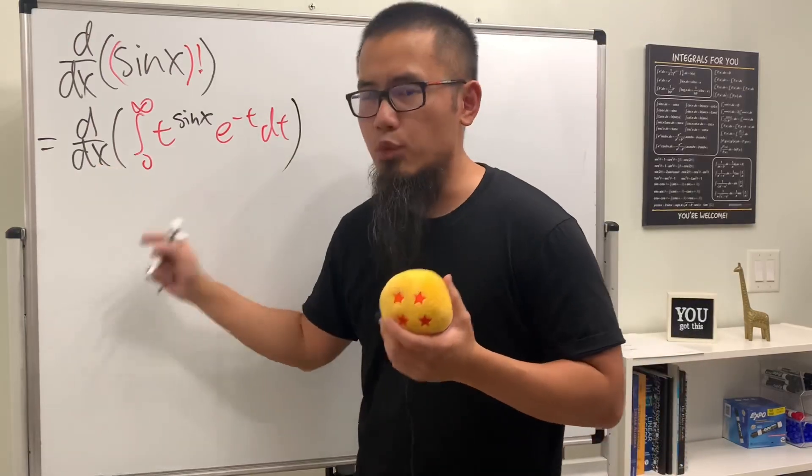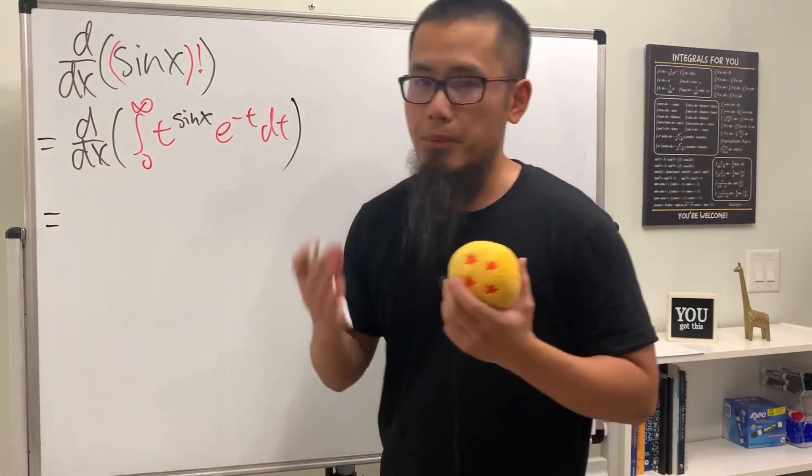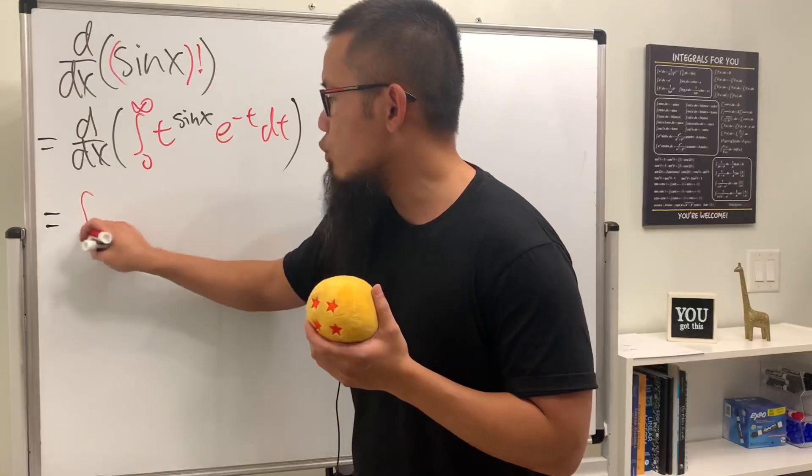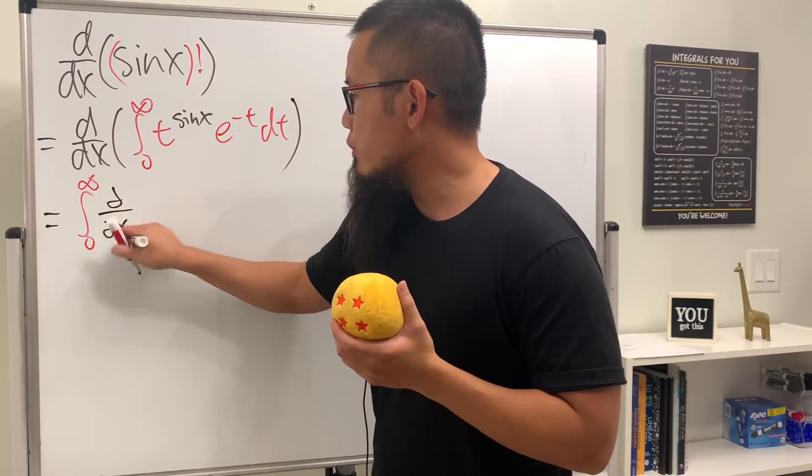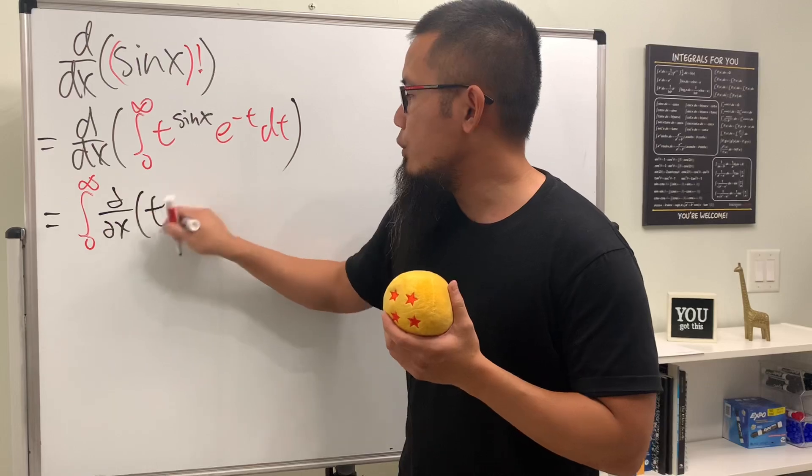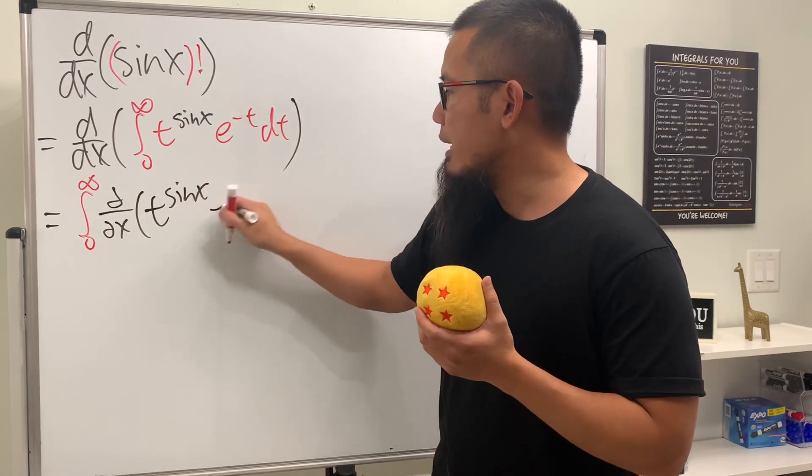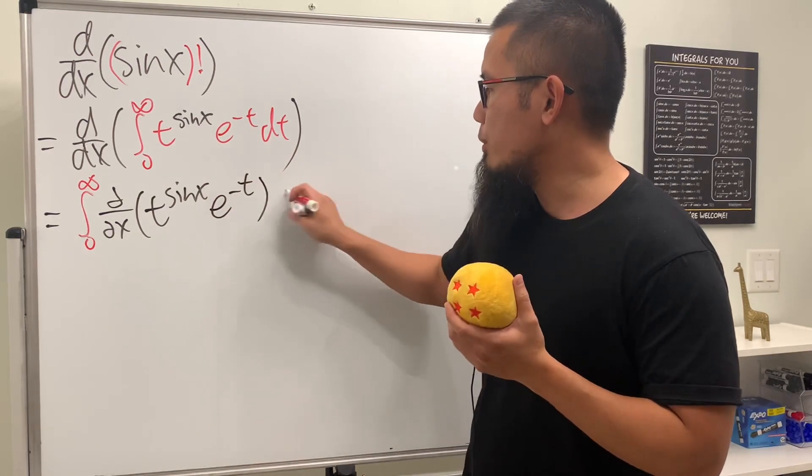And then to differentiate the integral, we just put this inside and talk about partial derivative. So this right here becomes the integral going from 0 to infinity. We take the partial with respect to x of t to the sin x power multiplied by e to the negative t, and then we put down the dt.